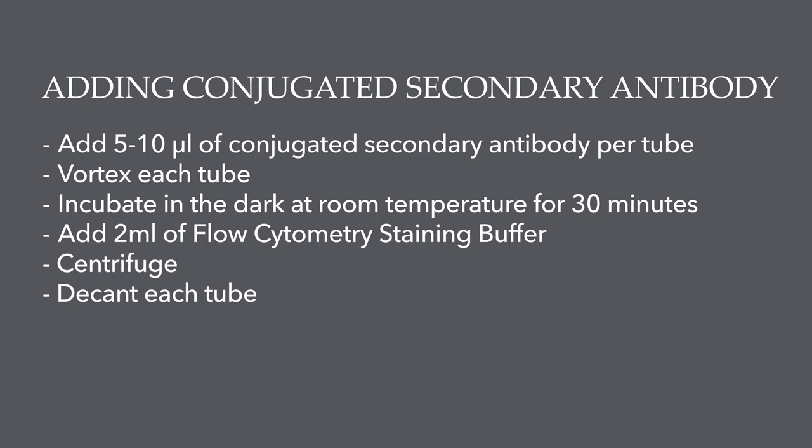If an unconjugated primary antibody was used, a conjugated secondary antibody will need to be used. Add 5 to 10 microliters per tube and vortex. Incubate the cells for 30 minutes at room temperature in the dark. Then repeat the wash step as before.